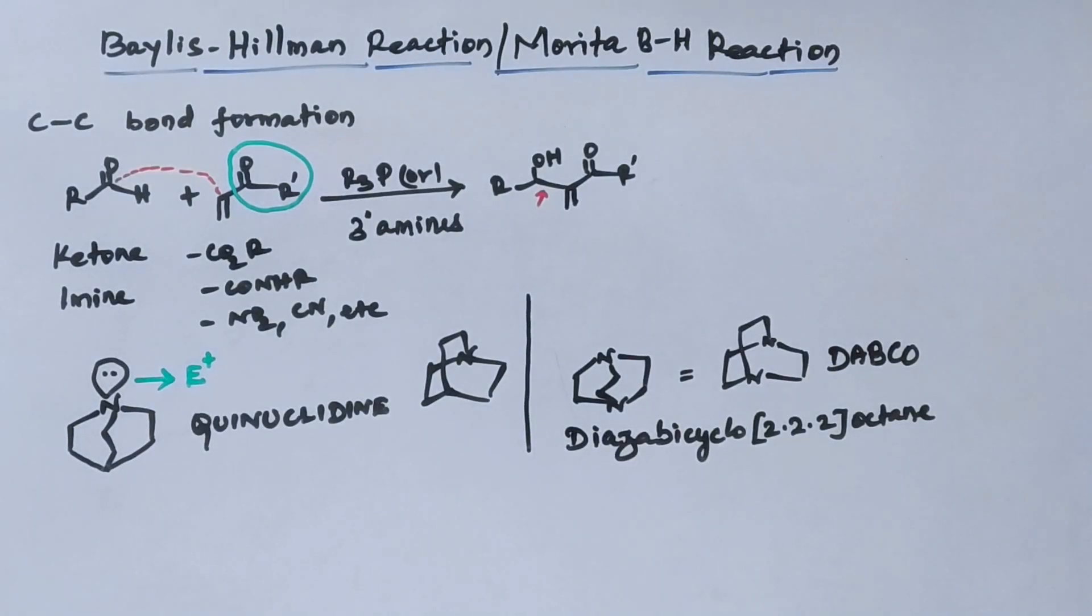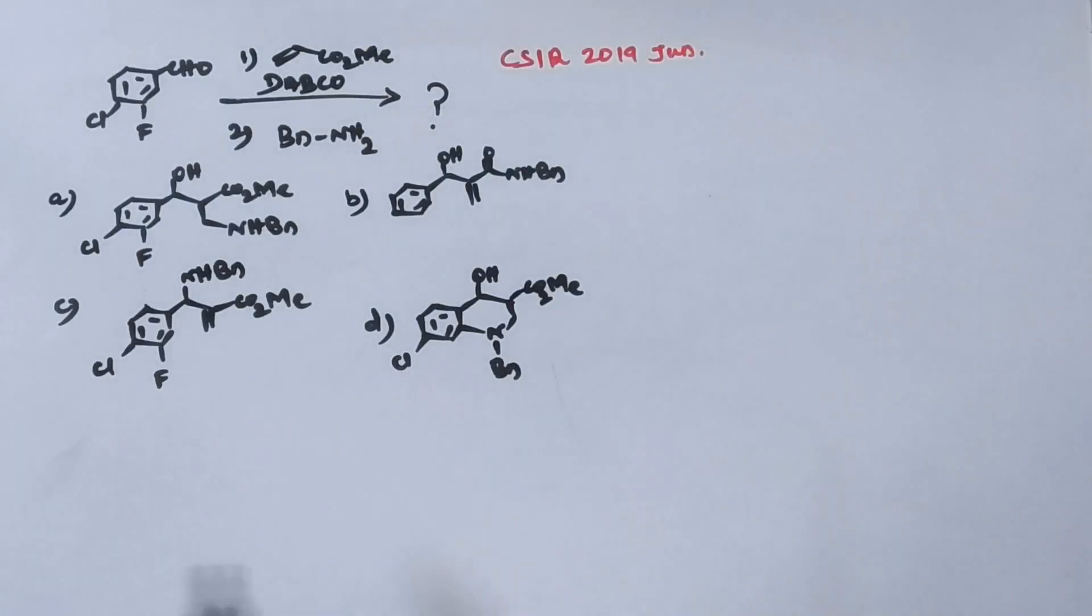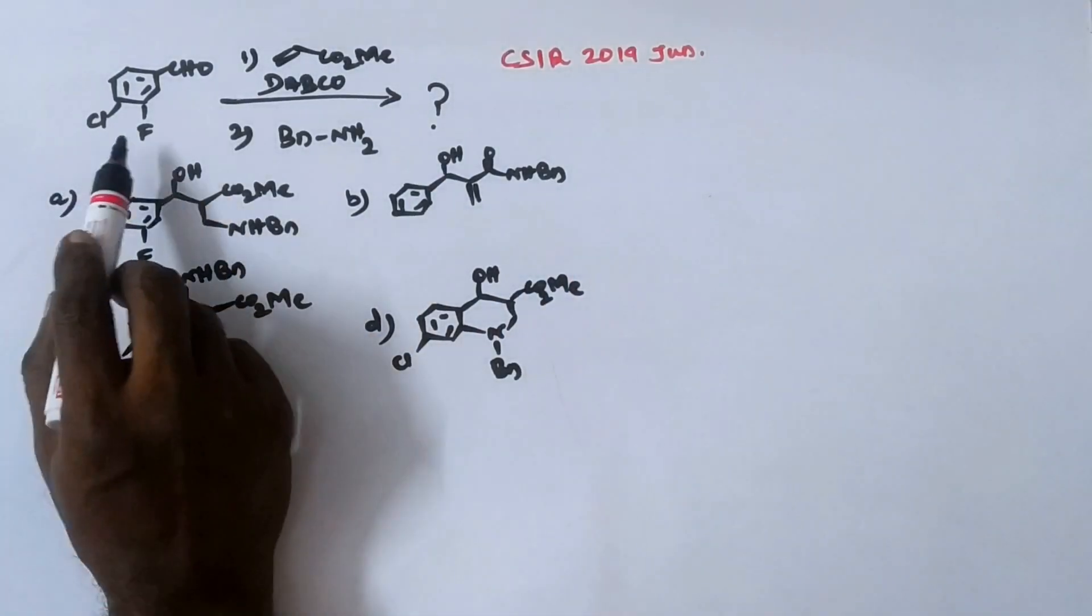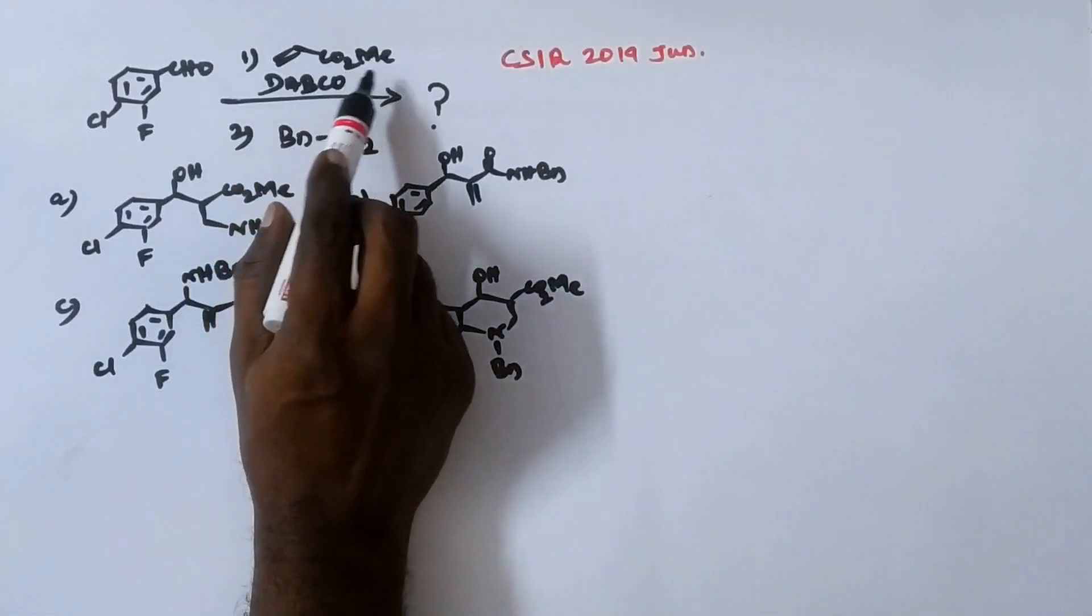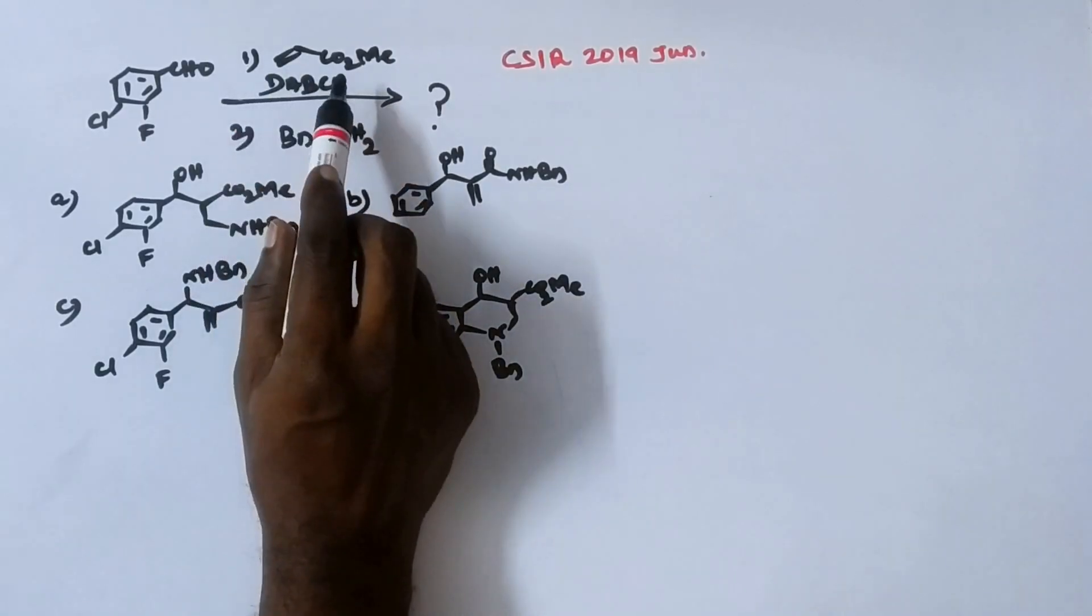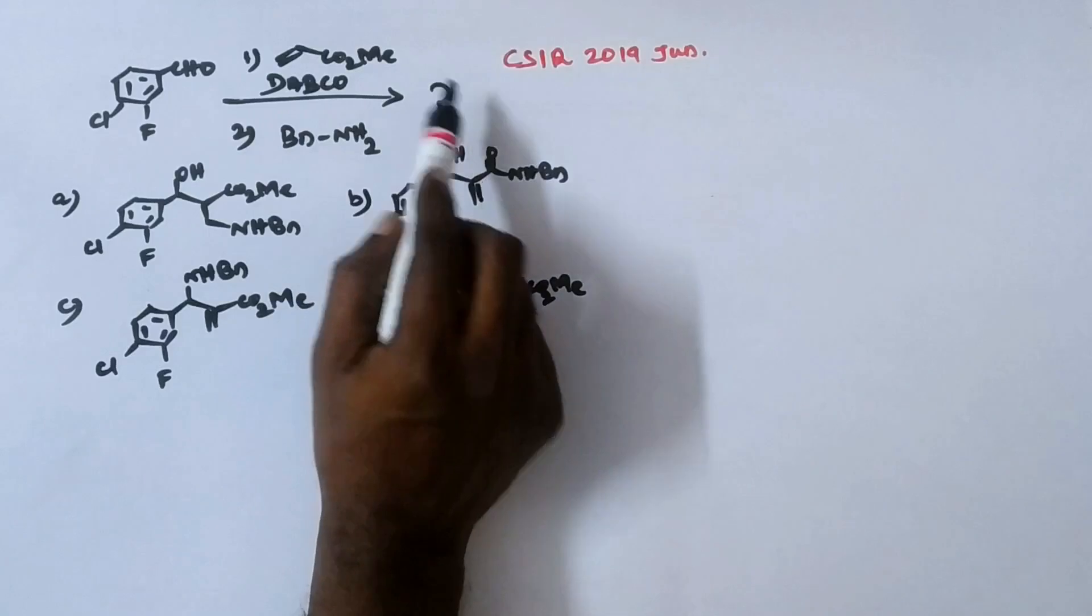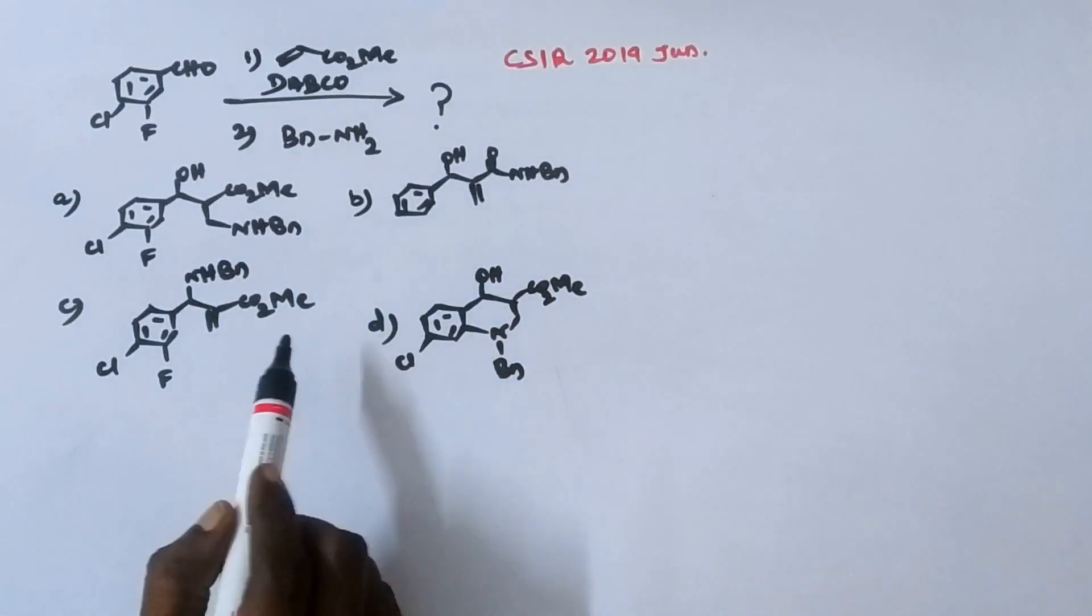Let's see some problems. Look at this problem. CSAR 2019, June. Aldehyde reacts with acrylate, methyl acrylate in the presence of DABCO. This is the first step. Second step is the reaction with benzylamine. So what is the product? Four products are given.